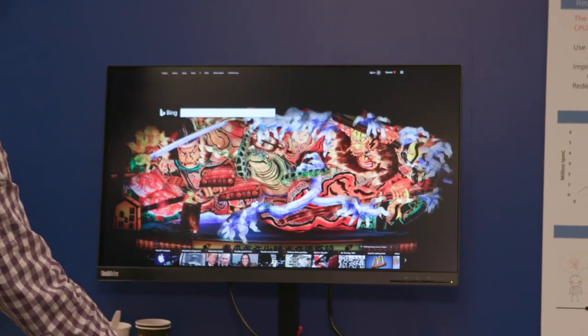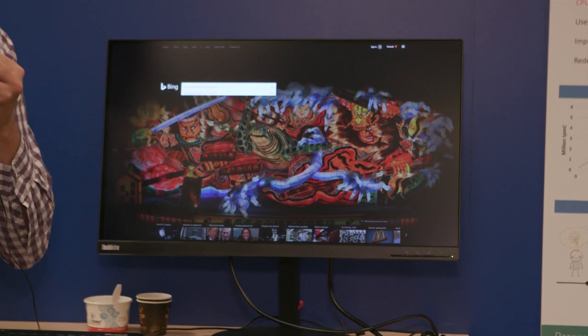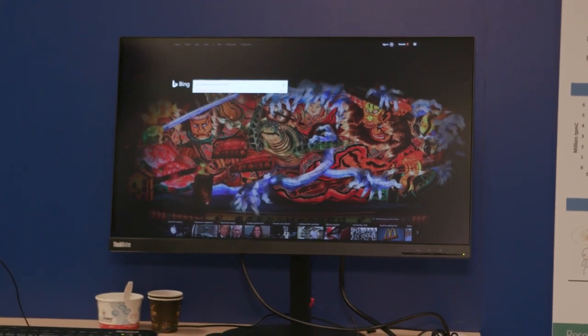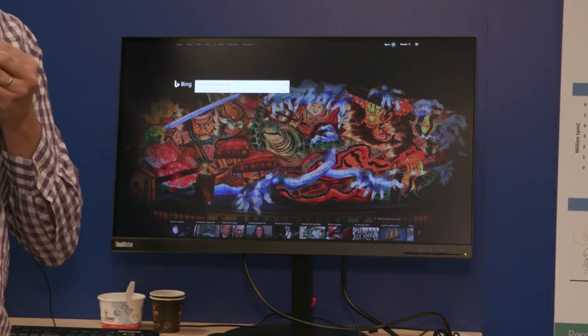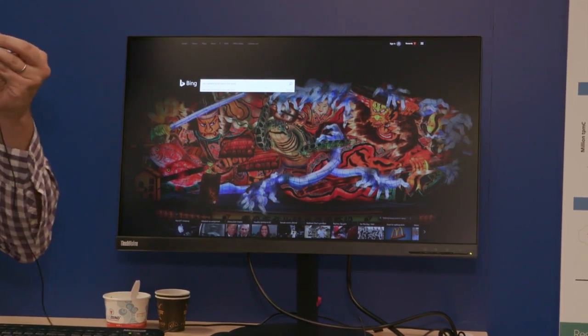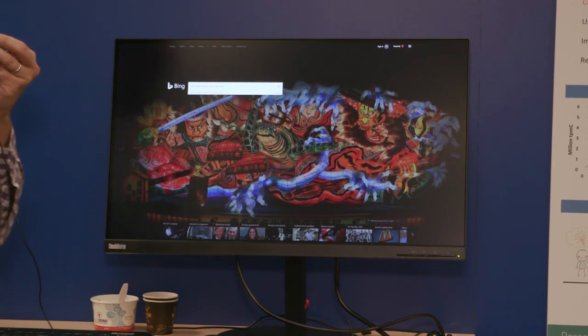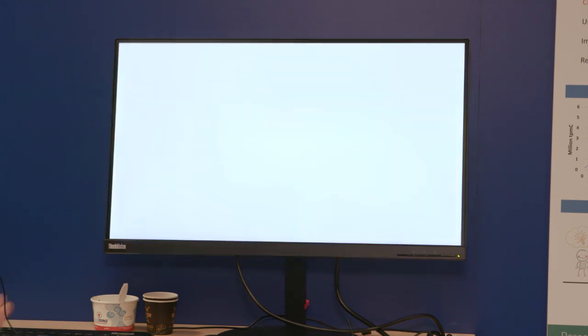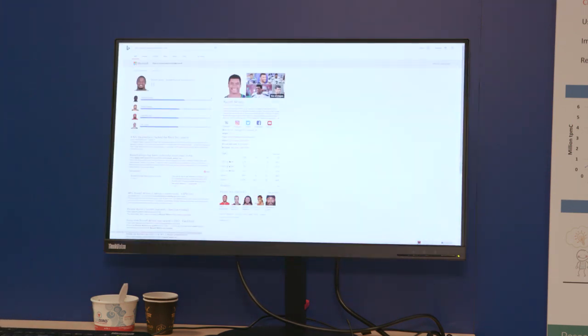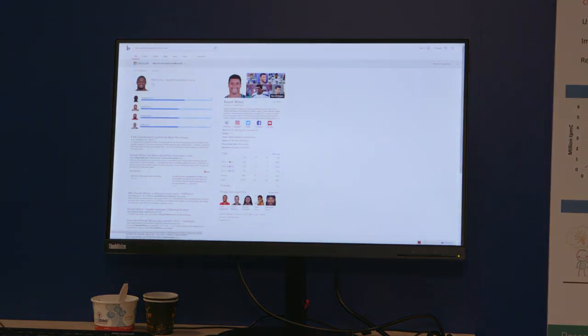So using a Bing query, there was recently a news article saying that Russell Wilson is the most sacked football player in the NFL. So an interesting question would be, so who sacks Russell Wilson so much? And what are the statistics on this? So we can type into Bing who sacked Russell Wilson the most, and then in seconds we get a result.